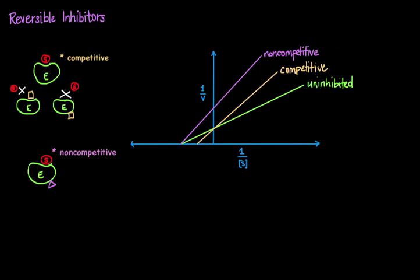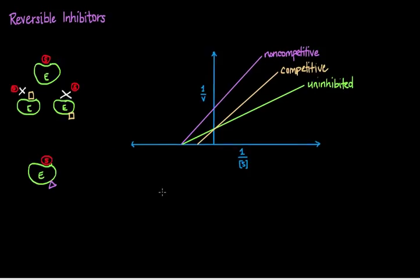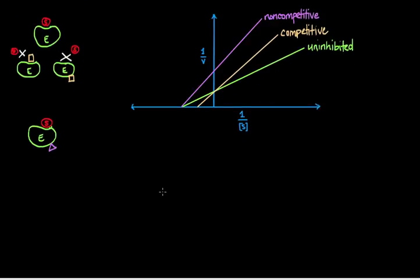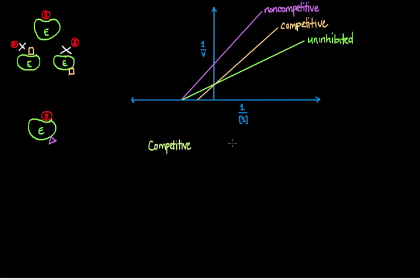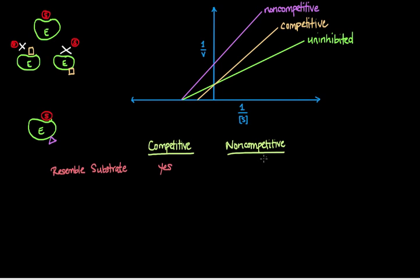Let's do a direct head-to-head comparison between competitive and non-competitive inhibitors. Starting with whether the inhibitor resembles the substrate: for competitive inhibitors the answer is yes, which is what gives them the ability to bind to the same active site as the substrate. For non-competitive inhibitors the answer is no — they don't resemble the substrate because they bind to their own allosteric site.